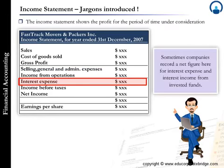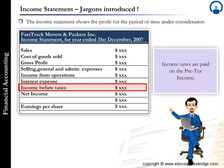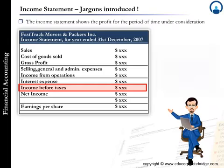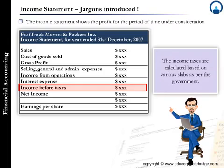Interest expense reflects the cost of a company's borrowings. Sometimes companies record a net figure for interest expense and interest income from invested funds. Pre-tax income is calculated after reducing operating income by interest expense. Income taxes reflect the taxes that the firm pays to the government, calculated based on various slabs as per the government.